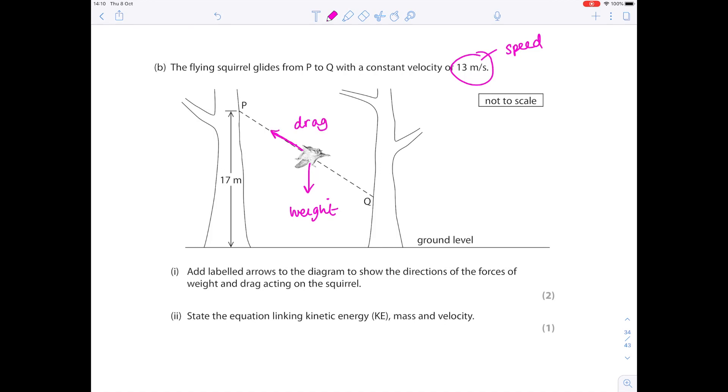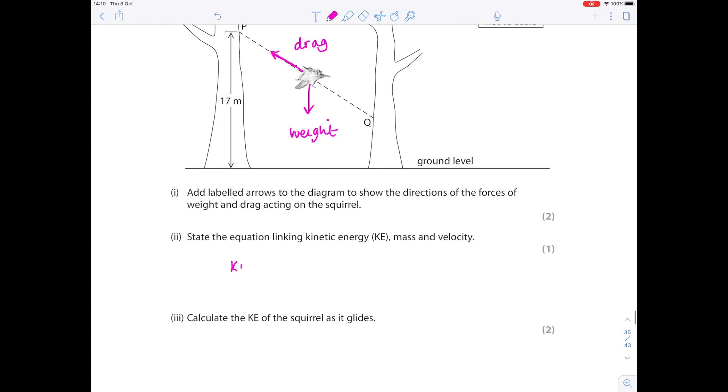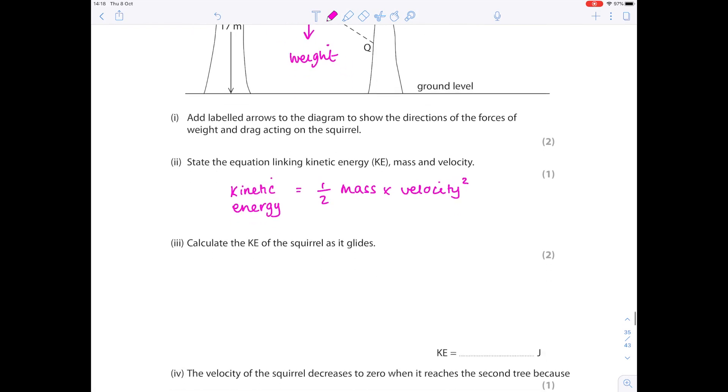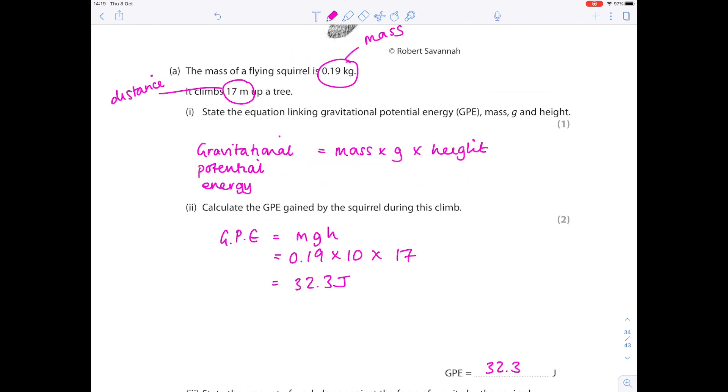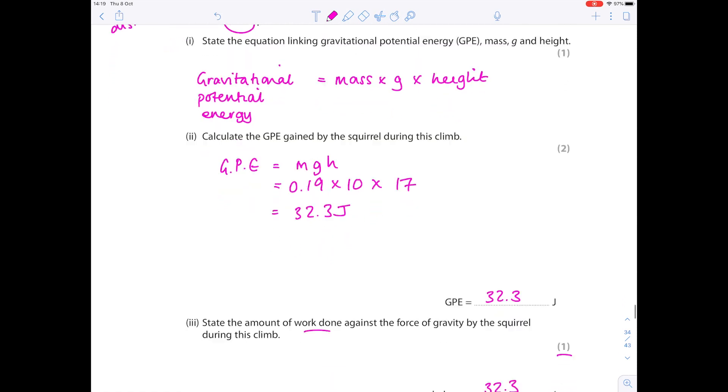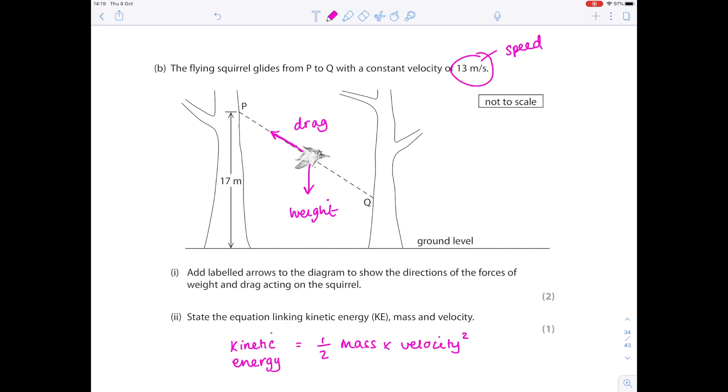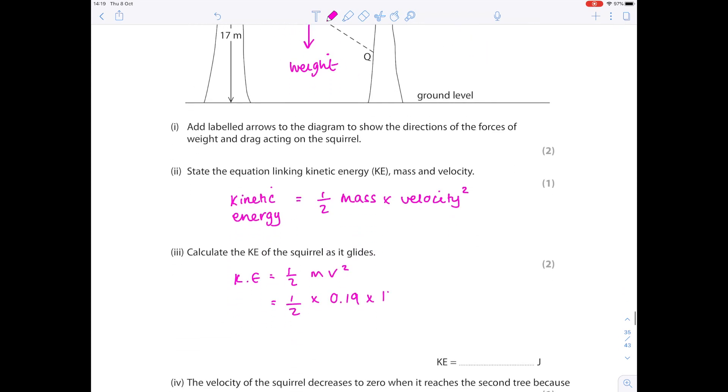State the equation linking kinetic energy mass and velocity. Again not that useful to put it into a triangle. Kinetic energy is half mass times velocity squared. We're now being asked to calculate the kinetic energy of the squirrel as it glides. Don't forget to scroll all the way back up to make sure you get all the information you need. So the mass is 0.19 kilograms. The velocity of the squirrel we can see here is 13 meters per second. We need to square that. Pop that into your calculator and your final answer is 16.1.